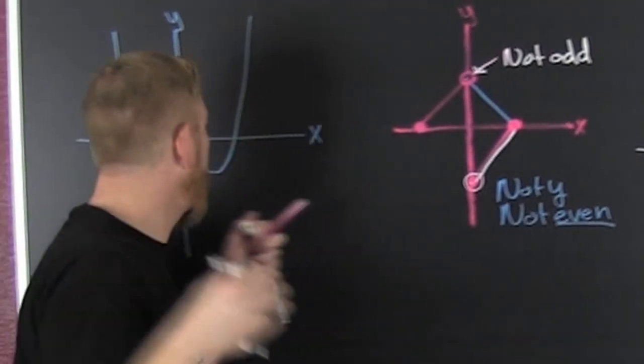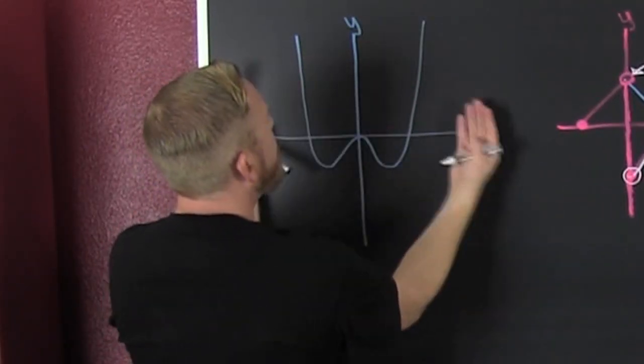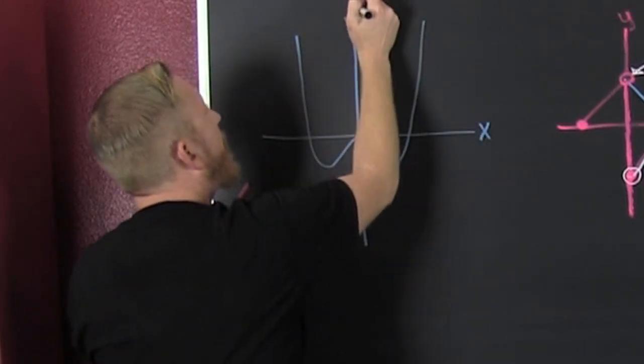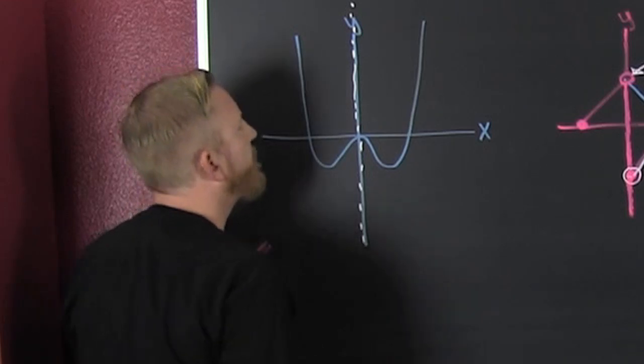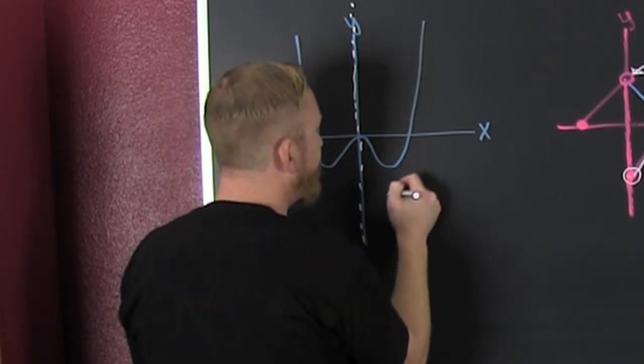One more. This guy. We check even by folding it across the y. Is it the same on the left as it is the right on this line of reflection? We reflect. It's the same on the left as it is on the right. So, this is even.